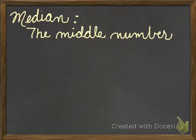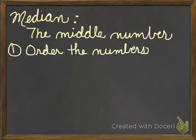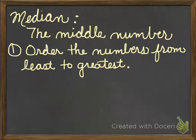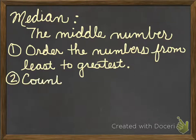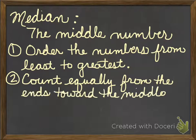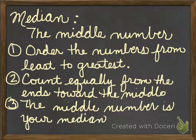The median is just the middle number in a set of numbers. To find the median, the first thing we're going to do is order the numbers from least to greatest — put the smallest number all the way up to the greatest number. After we do that, we're going to count equally from the sides toward the middle, and the middle number is our median.